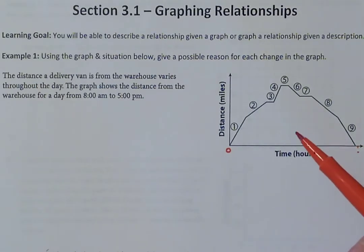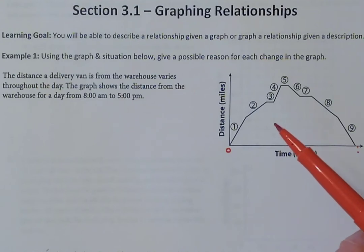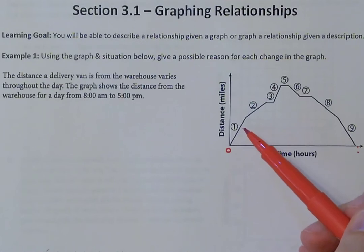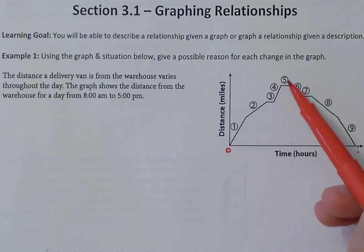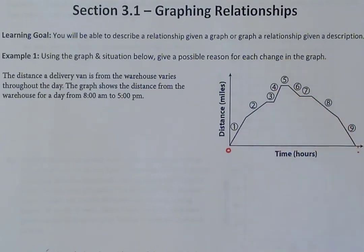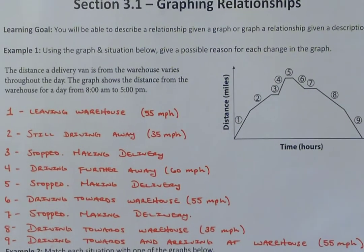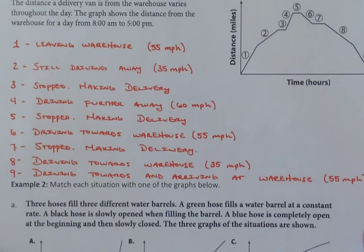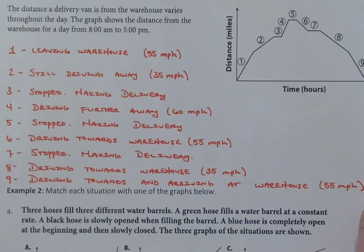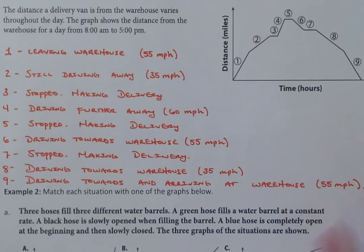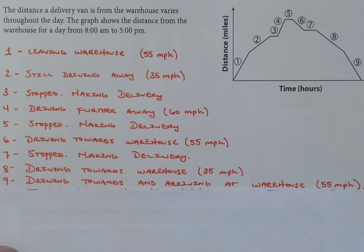This problem asks us to describe a possible reason for each change — that means providing a reason for parts 1 through 9 of what's happening. To save time, I'm going to use the completed notes and talk through what each part means and why I said that.